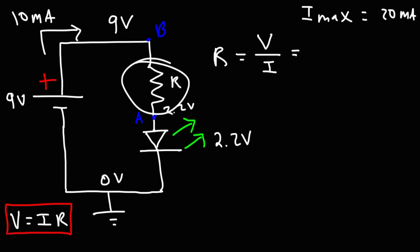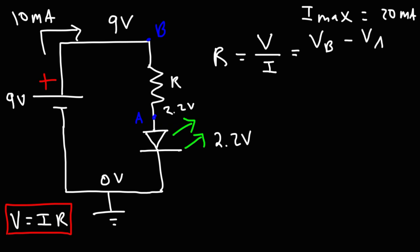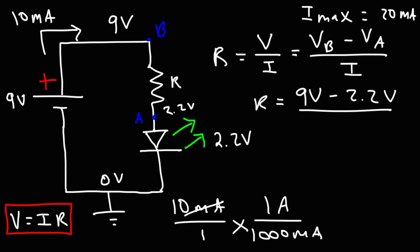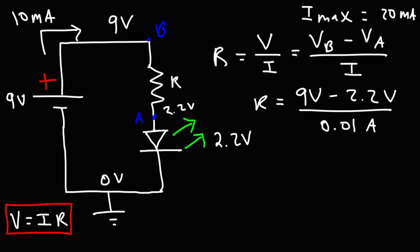The voltage across the resistor is the potential difference between points A and B — so it's the potential of B minus the potential of A, divided by the current flowing through the resistor. The potential at B is 9 volts, and the potential at A is 2.2 volts. The current we want is 10 milliamps. Converting to amps: 10 divided by 1,000 is 0.01 amps. So: 9 minus 2.2 is 6.8, and 6.8 divided by 0.01 gives 680.